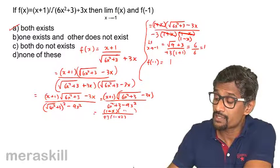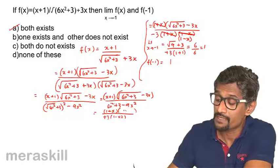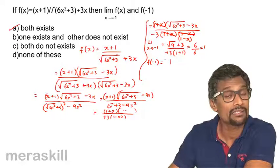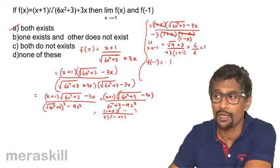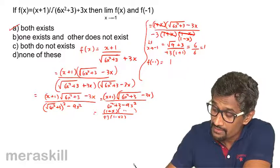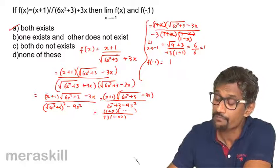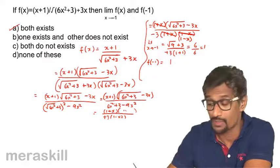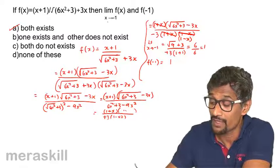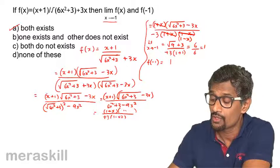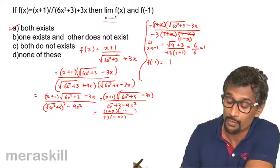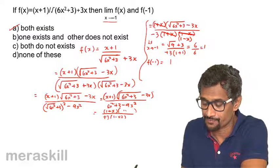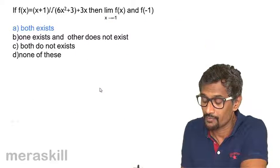We see that the limit of f(x) as x approaches minus 1 is 1, and f(minus 1) is also 1. This means the limit exists and f(minus 1) also exists. Since we are considering only x equals minus 1, both the limit and the function value exist.